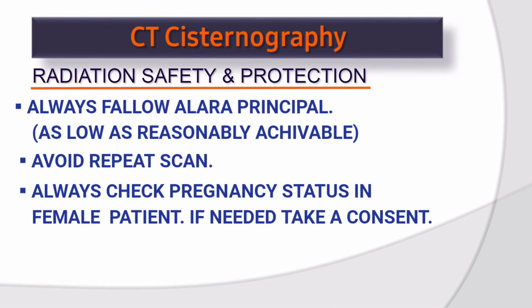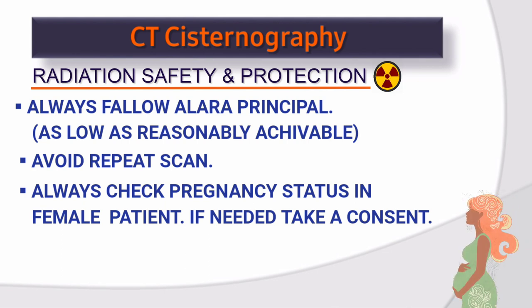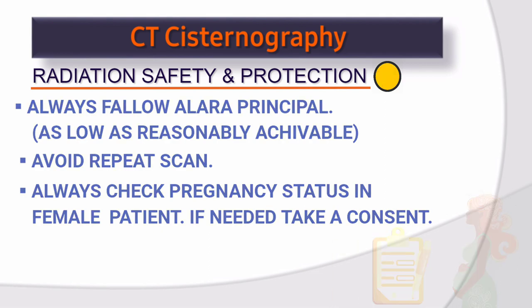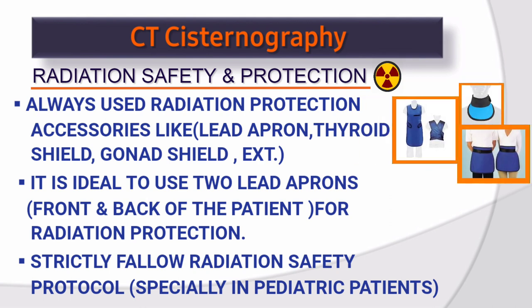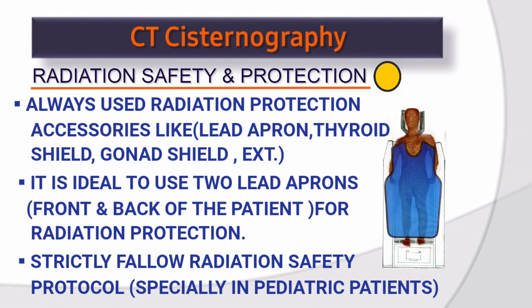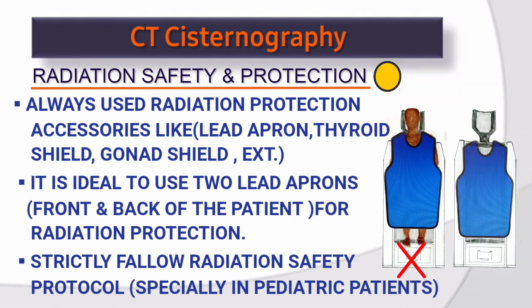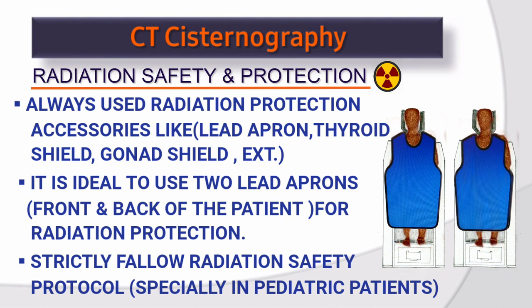Radiation safety and protection. Always follow the ALARA principle — as low as reasonably achievable. Avoid repeat scans. Always check pregnancy status in female patients; if needed, take consent. Always use radiation protection accessories like lead apron, thyroid shield, and gonad shield. It is ideal to use two lead aprons — front and back of the patient. Strictly follow radiation safety protocol, especially in pediatric patients.